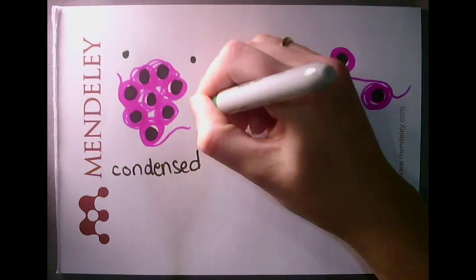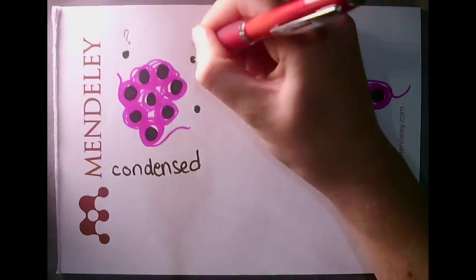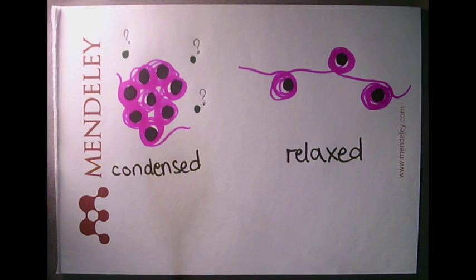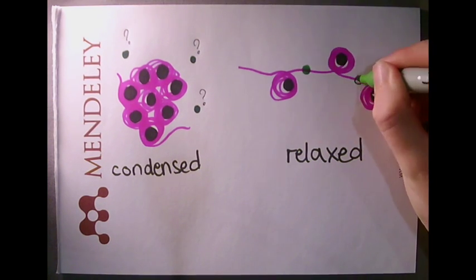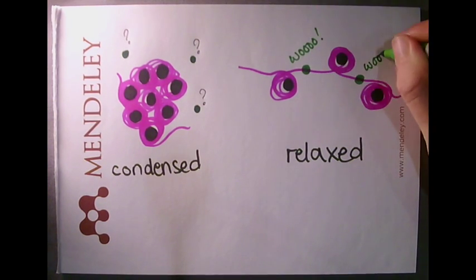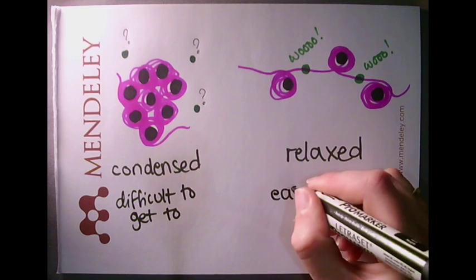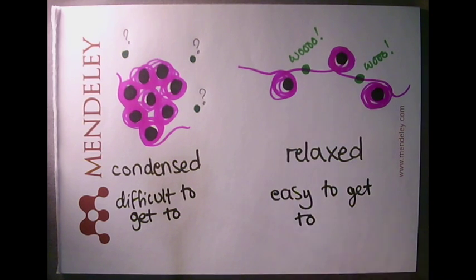These green dots represent polymerase proteins which need to access the DNA in order to read it and transcribe the instructions contained in a gene. Polymerase cannot get to the DNA when it's in a condensed state, so these genes are repressed. But it has no trouble getting to the relaxed DNA and doing its job, so these genes are activated.